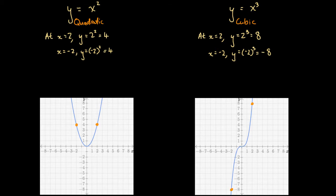We've discovered that the reason the left-hand side of the cubic graph differs from the quadratic is the algebraic construction: for the quadratic, a negative times a negative is positive, but for the cubic, a negative times a negative times a negative is negative. So substituting a positive x gives a positive y, while substituting a negative x gives a negative y — that's why these graphs look so different on the left-hand side.